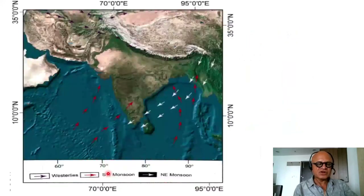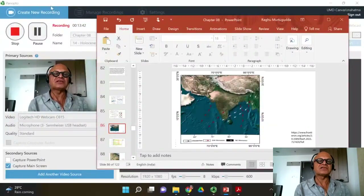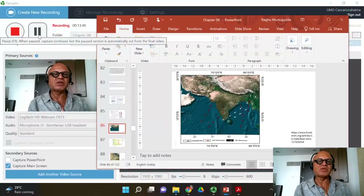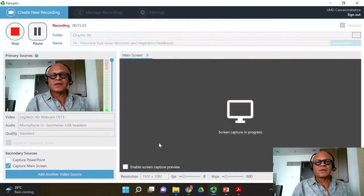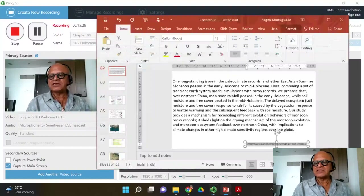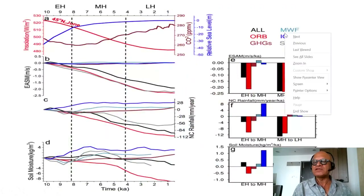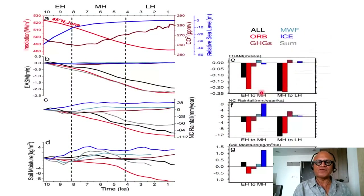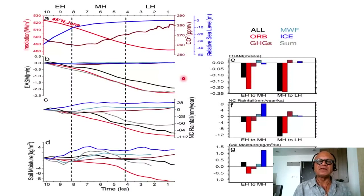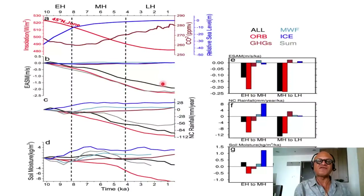Let's come back to the Indian monsoon in the next podcast. One clarification: MWF stands for melt water flux, which is an important forcing component. Through the Holocene, glacial melts created the 8200 event as well as the Black Sea Noah's flood event, already discussed in a previous podcast. This affects the meridional overturning circulation and the global energy balance, as well as the location of the ITCZ, which in turn affects the monsoons.